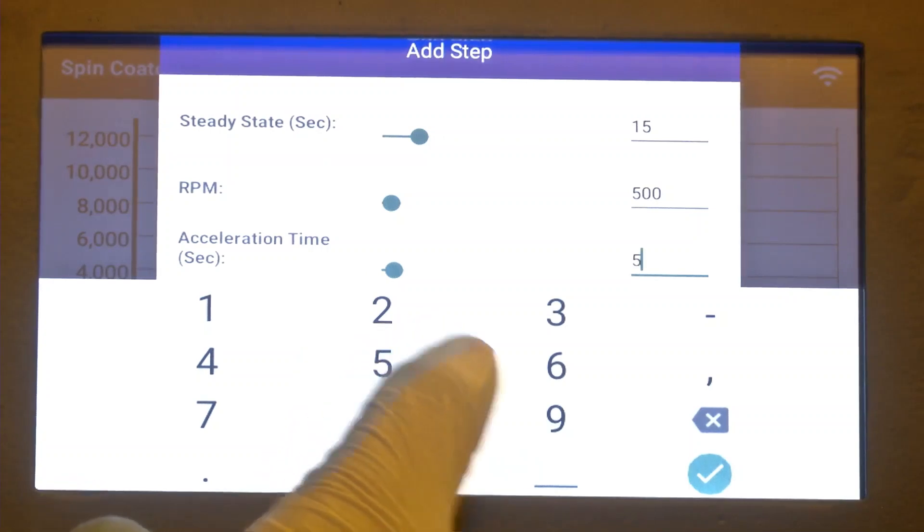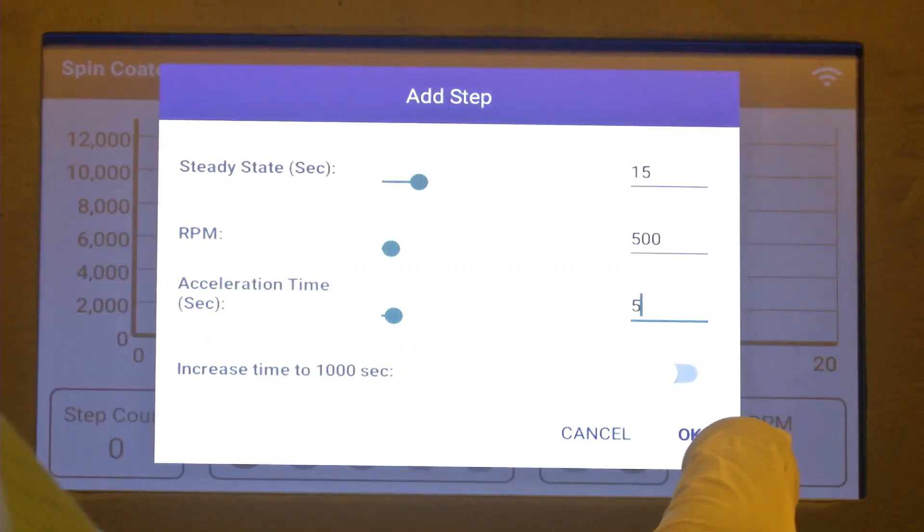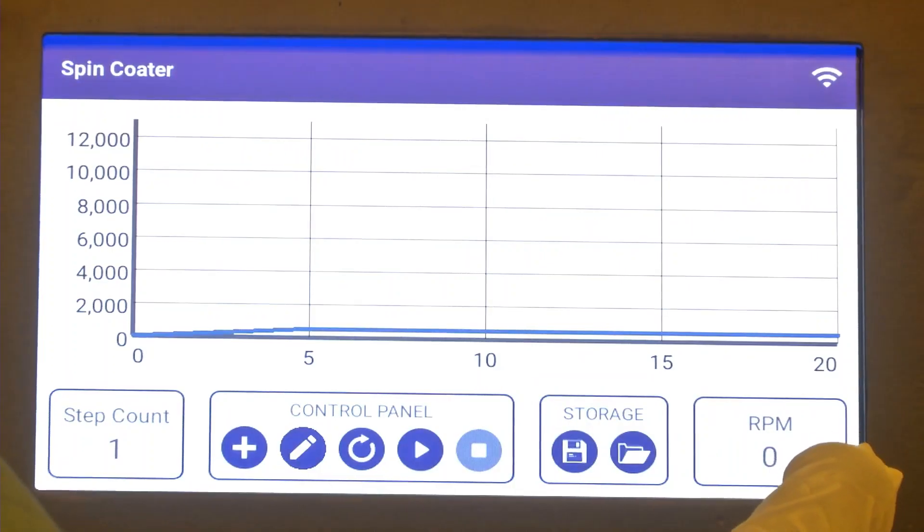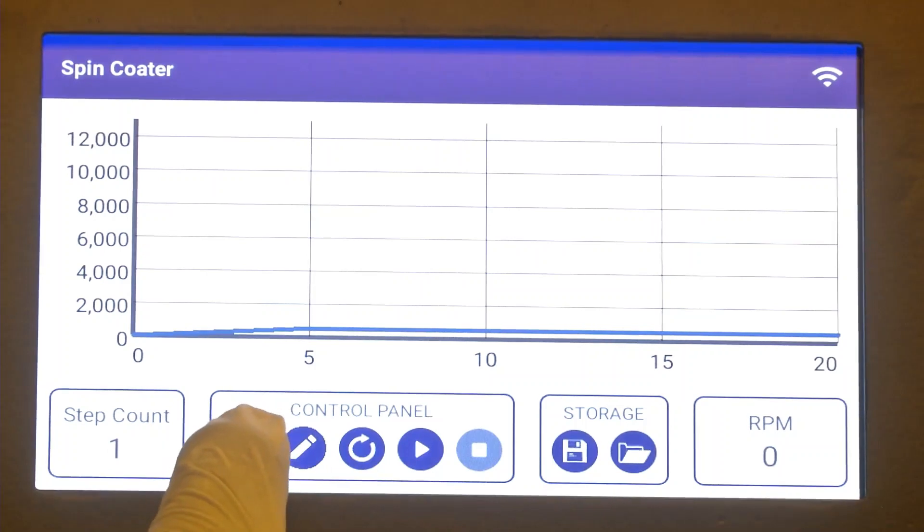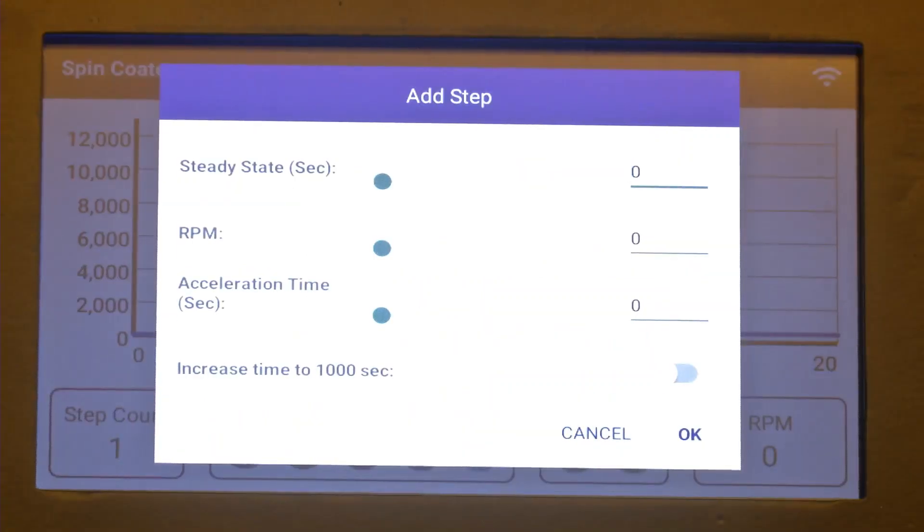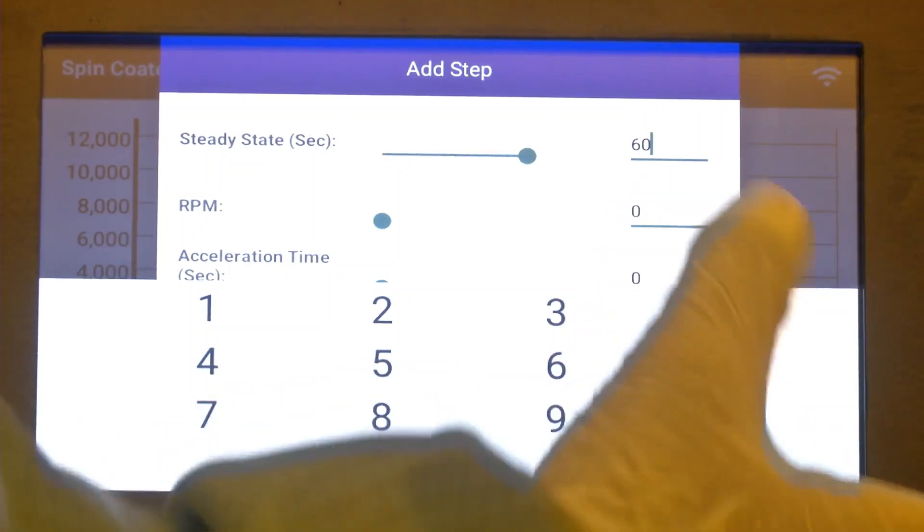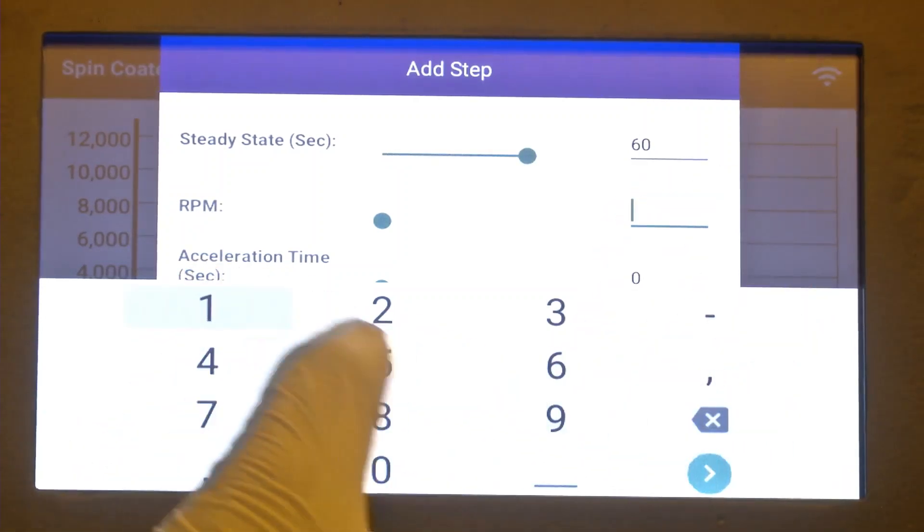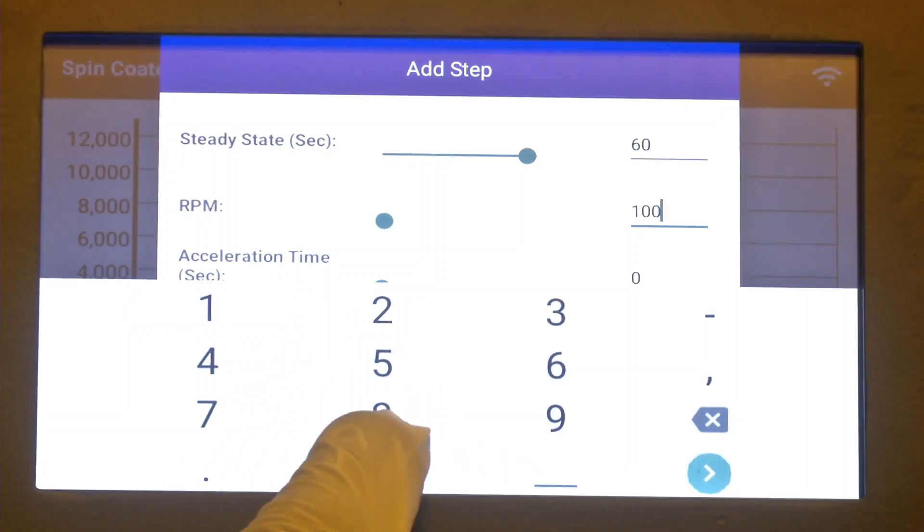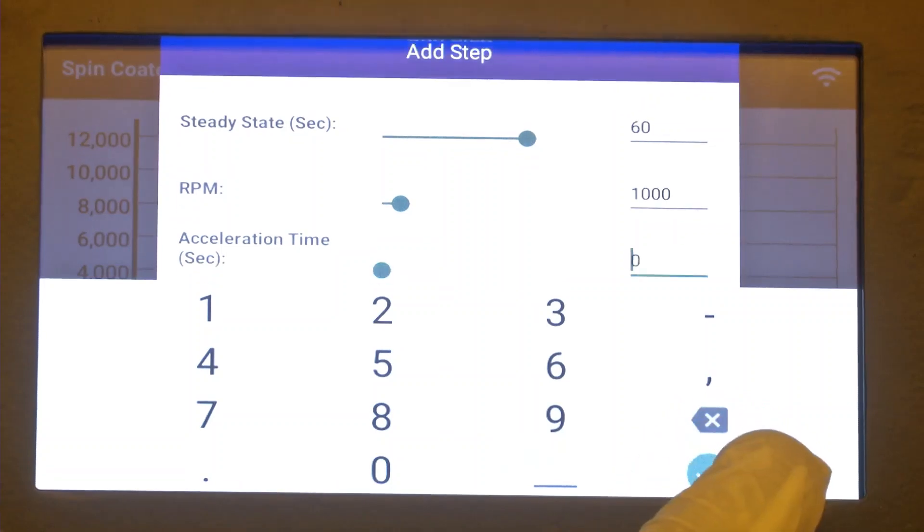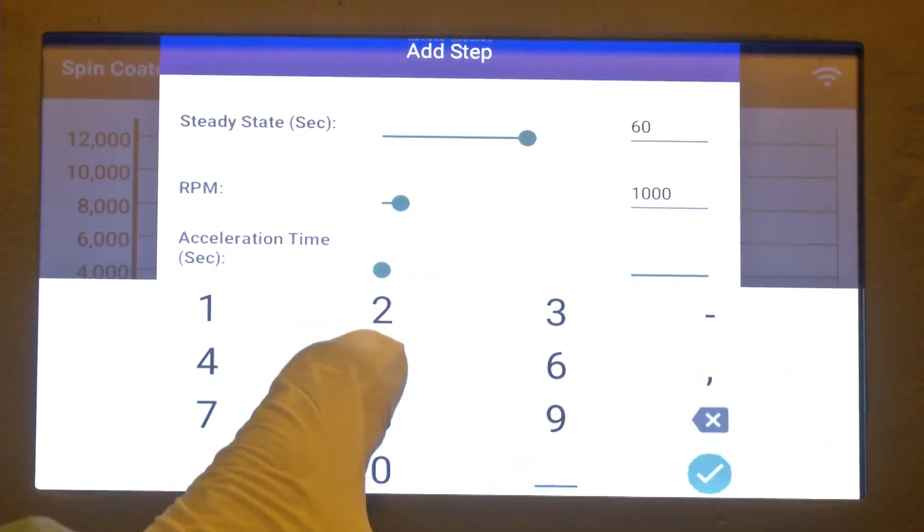We can give the acceleration as well. The next step is to give the higher speed to ensure that the solvent which is spread uniformly can now be evaporated and thinned down. Generally for photoresist we give 4000 RPM for 40 seconds, but in this case we have optimized to get a flexible substrate so we are giving it for 60 seconds at 1000 RPM. The acceleration will remain almost the same, around 400.